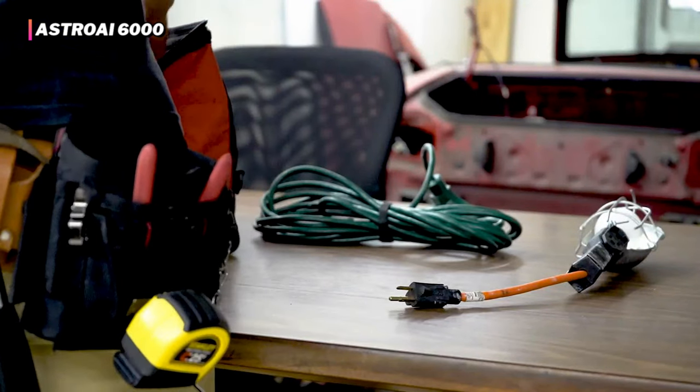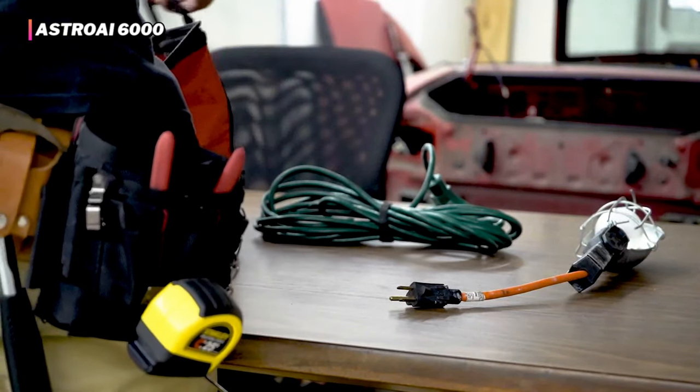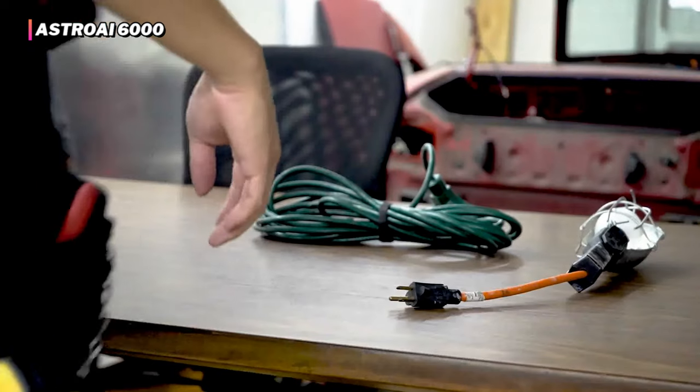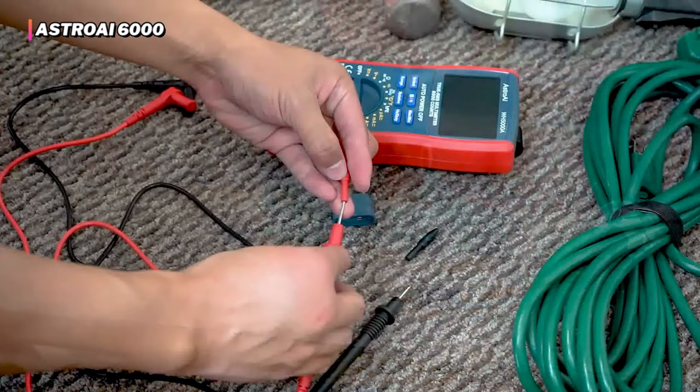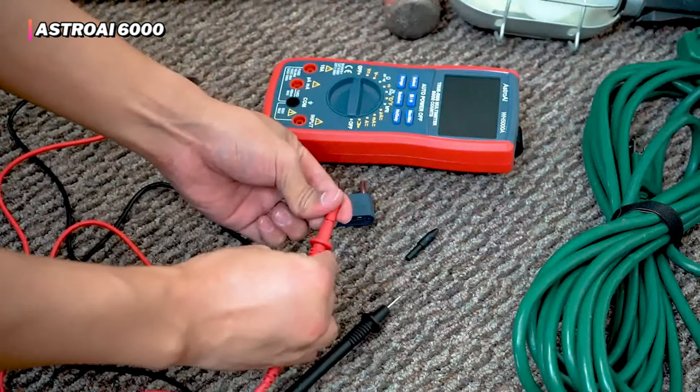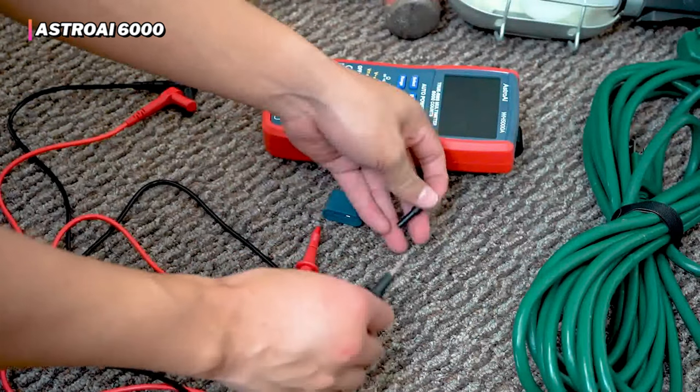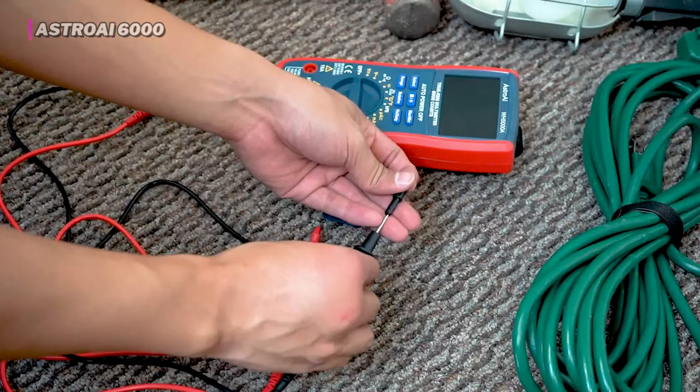These critiques aside, this is an exceptional digital multimeter. The Astro AI 6000 is a terrific tool for troubleshooting all sorts of circuits and wiring and is the multimeter we recommend first for most people.